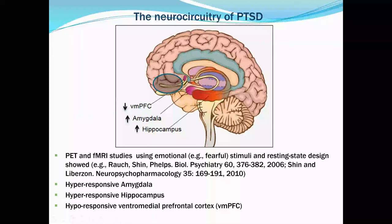The VMPFC provides very important top-down modulation to suppress fear activity from the amygdala and hippocampus. When something is damaged in the VMPFC, you have less top-down modulation — just like driving a car where the brake is not fully functioning. The VMPFC is like the brake, and the amygdala and hippocampus are like the engine.